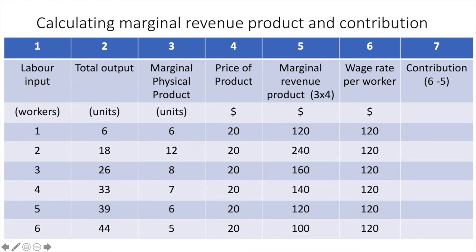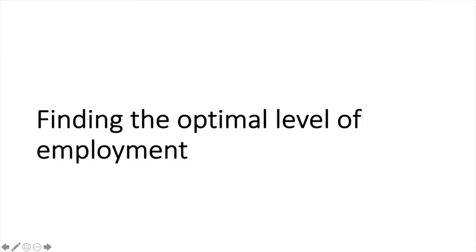In the final column we have our contribution — essentially the amount over the wage rate the worker is contributing to the firm's profit. The optimal level of employment for a profit-maximizing firm is relatively simple to deduce. The firm will employ workers as long as the worker's marginal revenue product exceeds their wage rate. Once MRP is equal to the wage rate, the employer will stop hiring more workers. If the wage rate is above the MRP of the worker, then the firm will not employ them.